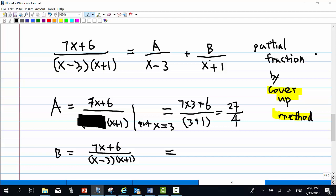To find B, B is on top of x plus 1. So you cover up x plus 1 and then you put x plus 1 equal to 0, which means x equal to minus 1 now. So we get 7 times minus 1 plus 6 over minus 1 minus 3. And that is minus 1 over minus 4, which is 1 quarter. Therefore, we know A is 27 over 4. B is 1 quarter.